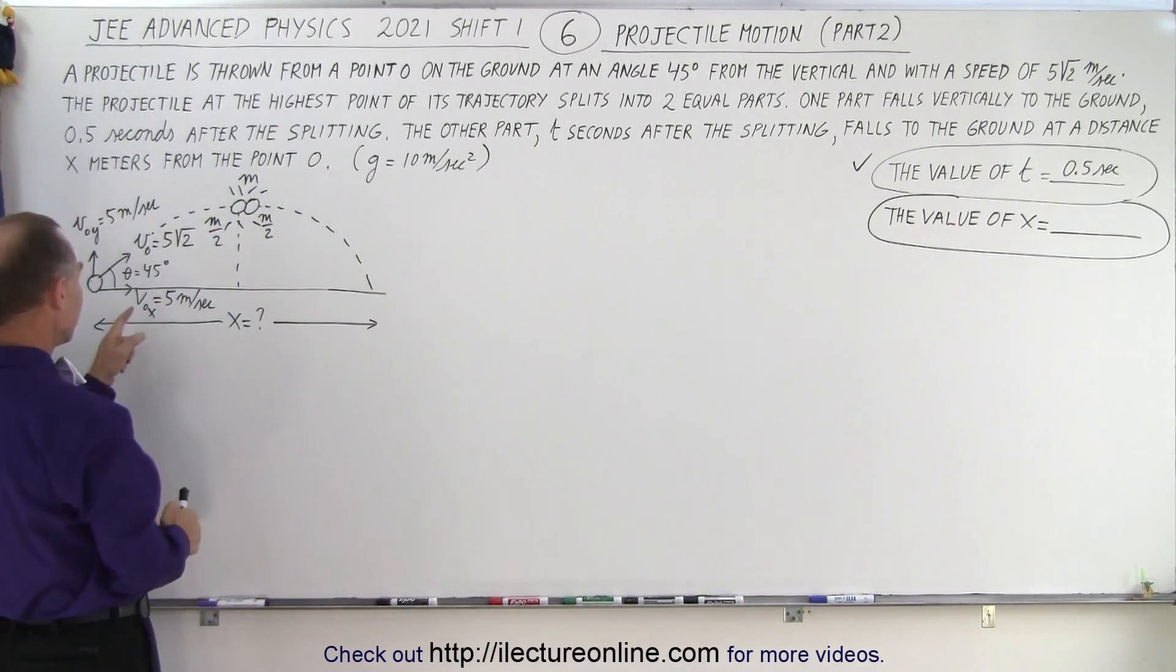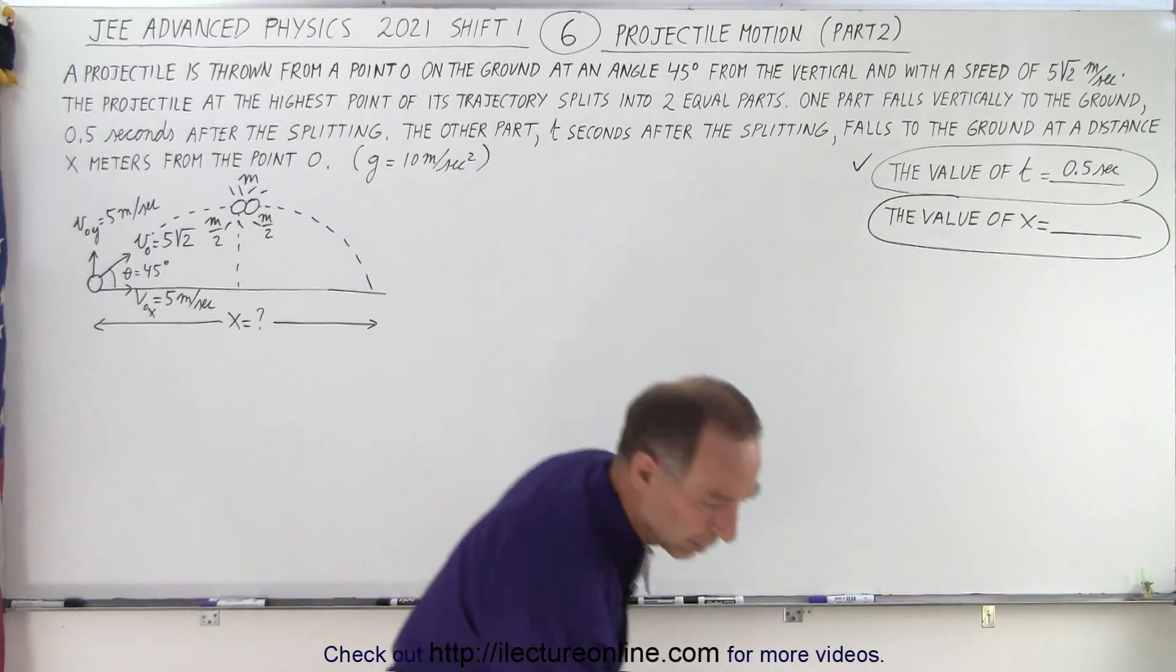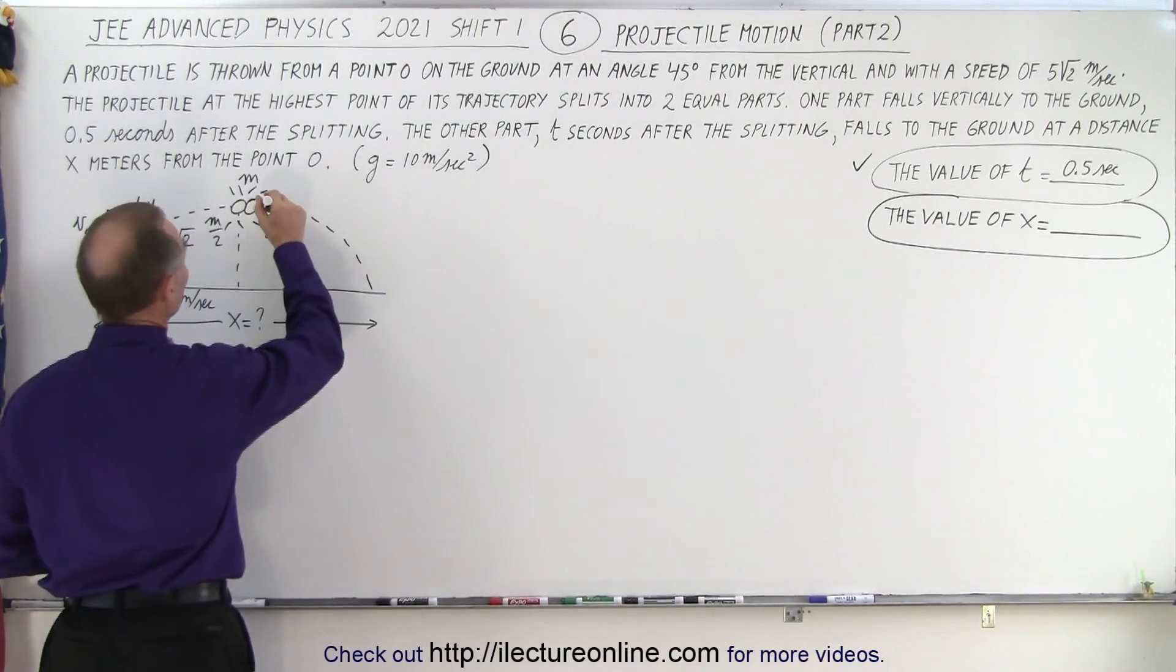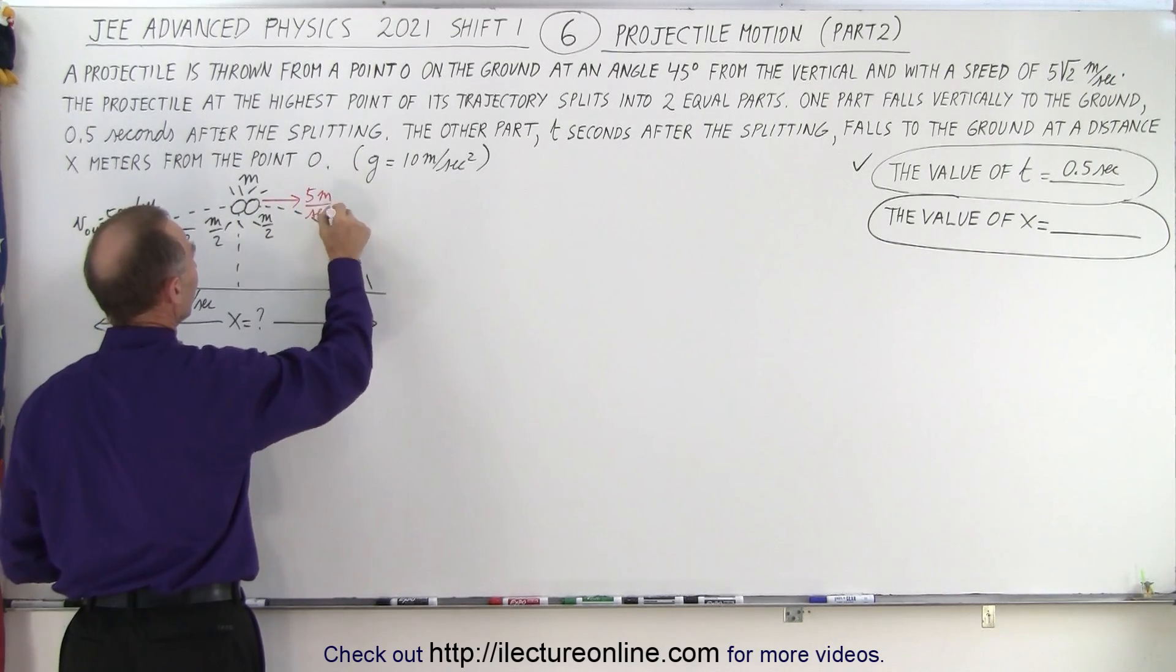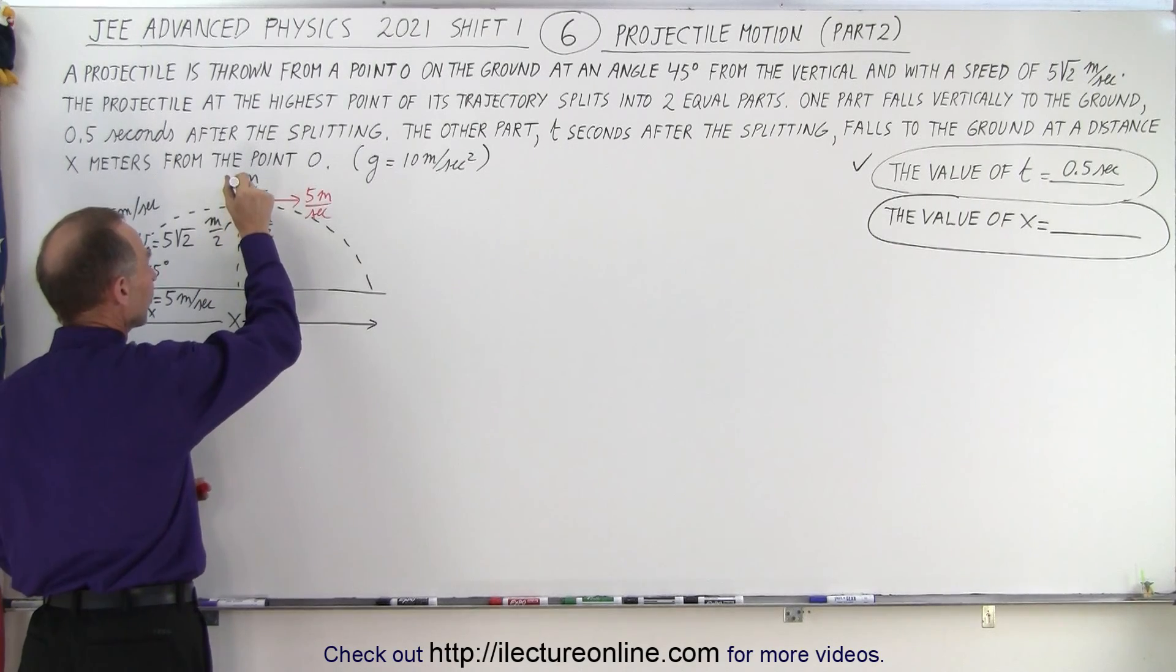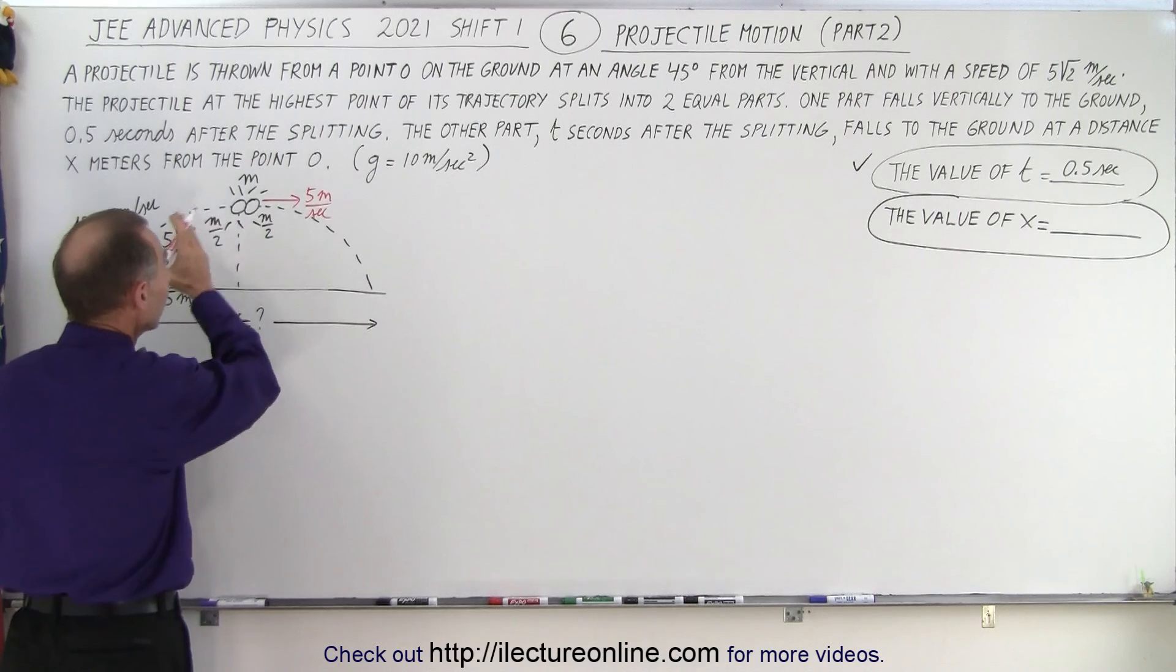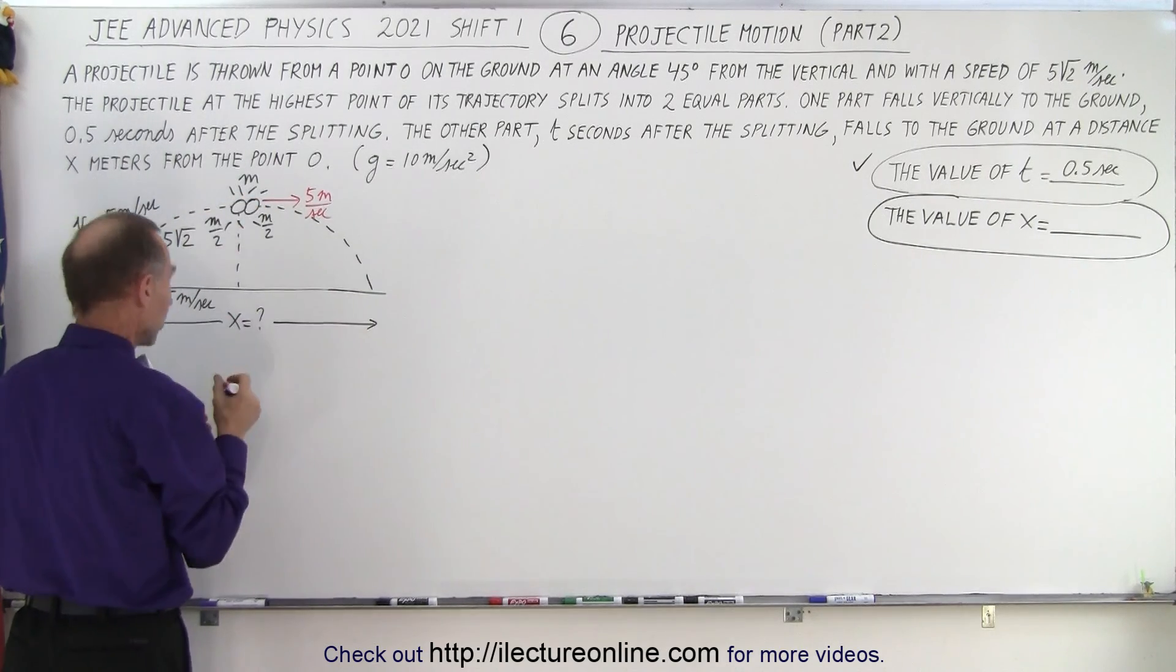And what we want to do is figure out how fast is the object moving at the top. Well, it should be the same speed as the original velocity in the x direction which is 5 meters per second. So at this moment, the projectile is moving at 5 meters per second when it reaches the top. But if it splits into two and one piece falls vertically downward, that means it has no longer any velocity in the x direction. And all the momentum is now transferred to the other object.